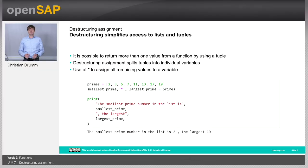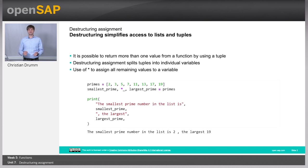What are Destructuring Assignments? Destructuring Assignments simplifies access to lists and tuples. So far, we have always seen that a function can return one value, but it is possible to return multiple values from a function using a list or a tuple. And using a Destructuring Assignment, we can split these multiple values into individual variables again. And there's also a shortcut for stuff that we want to ignore.